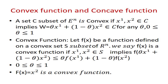Before going to the Lagrangian method, we need to know some terms: convex function, convex set, and concave function. A set C is convex if x1, x2 belonging to C implies w = θx1 + (1−θ)x2 belongs to C, for θ between 0 and 1. If this condition is fulfilled, the set is said to be convex.